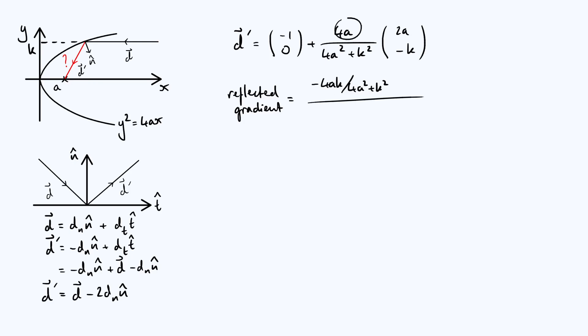Now we've got fractions within fractions, so we're going to multiply top and bottom of the overall fraction by 4a² + k². That's going to give you simply -4ak on the top. On the bottom, you will get 8a², but you'll also get -4a² - k². So the 8a² - 4a² gives you 4a², and then you've got -k². So that's the gradient of the red line.